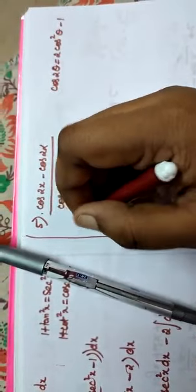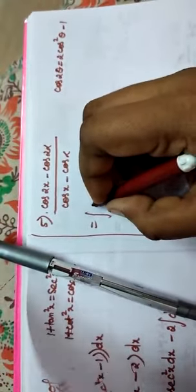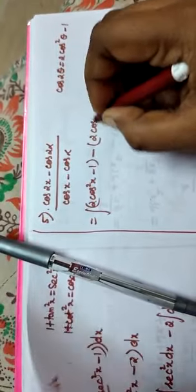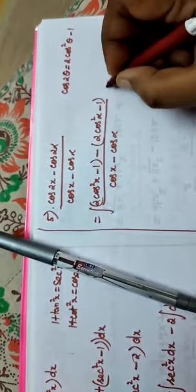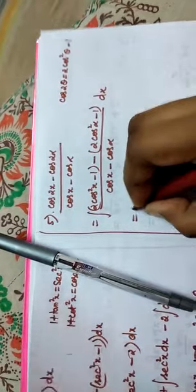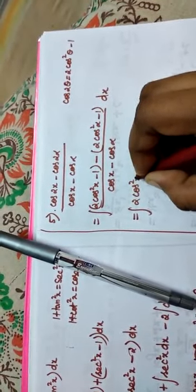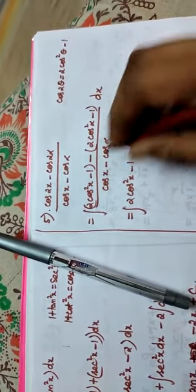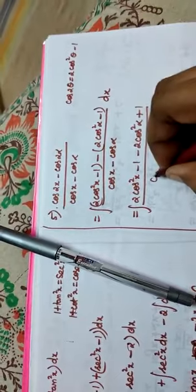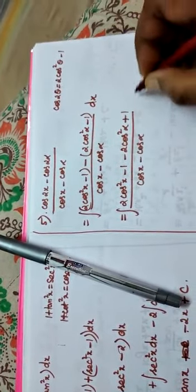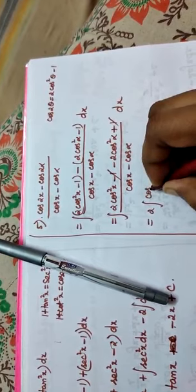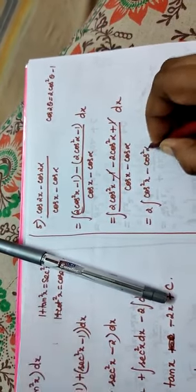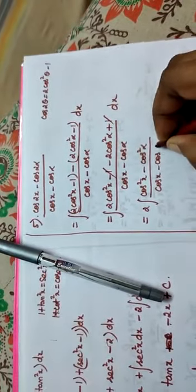Use the formula here. Integral of: cos 2x becomes 2 cos squared x minus 1, minus 2 cos squared alpha minus 1, divided by cos x minus cos alpha, into dx. Expanding: 2 cos squared x minus 1 minus 2 cos squared alpha plus 1, divided by cos x minus cos alpha. The minus 1 and plus 1 cancel.